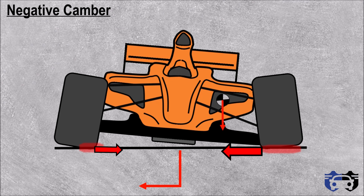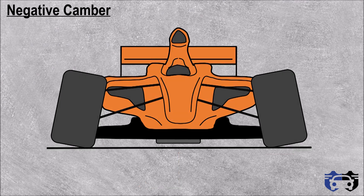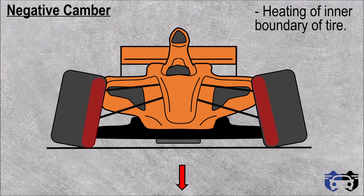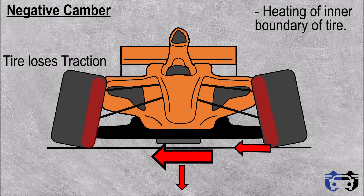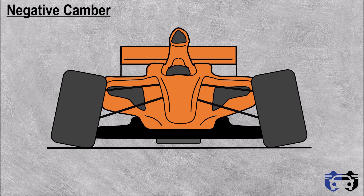Negative camber also produces camber thrust, which helps the vehicle while turning by providing extra inward force. However, during straight driving, negative camber will cause excessive heating of the inner boundary of the tire, increasing tire wear. Additionally, since negative camber produces camber thrust, if one tire hits a bump or loses traction, it can lead to sliding of the vehicle, which affects road handling. So negative camber is good for turns but requires compromise on straight-line acceleration or deceleration.